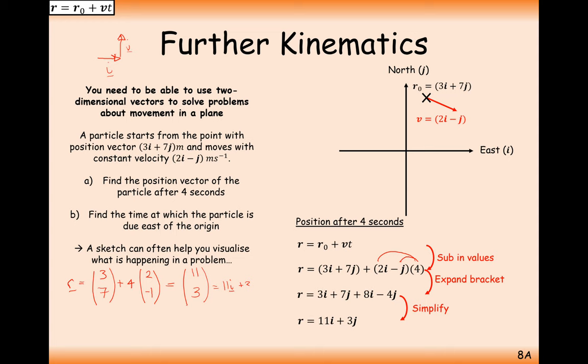I generally prefer the column vector method, though the textbook prefers the i and j method. It is nice to be able to visualise it as column vectors if you wish to do so.